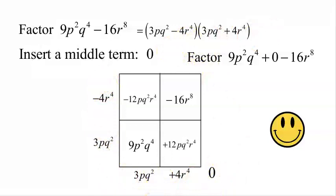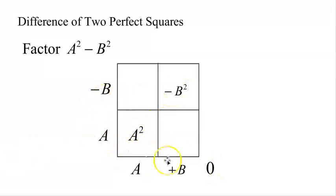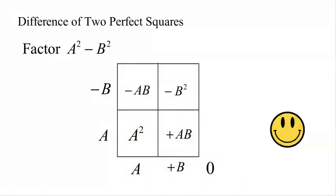Our strategy is the same for all differences of two perfect squares. In textbooks you'll see the formula for a squared minus b squared, but let me show where it comes from. Put a squared in the lower left and b squared in the upper right, with a middle term of 0. How do we build a squared? a times a. How do we build negative b squared? Negative b times positive b. The middle terms are a times negative b giving negative ab, and a times positive b giving positive ab. Negative ab plus positive ab is 0, so the formula gives us: a squared minus b squared equals a minus b times a plus b.